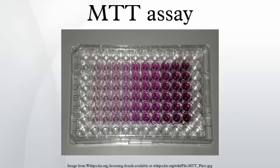MTS (5-(3-carboxymethoxyphenyl)-2-(4-sulfophenyl)-2H-tetrazoleum), in the presence of phenazine methosulfate, produces a formazan product with an absorbance maximum at 490-500 nm in phosphate buffered saline. The MTS assay is often described as a one-step MTT assay, which offers the convenience of adding the reagent straight to the cell culture without the intermittent steps required in the MTT assay. However, this convenience makes the MTS assay susceptible to colorimetric interference, as the intermittent steps in the MTT assay remove traces of colored compounds, whilst these remain in the microtitre plate in the one-step MTS assay.